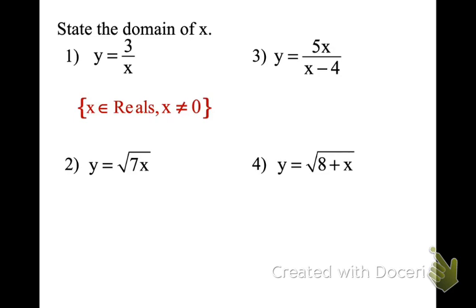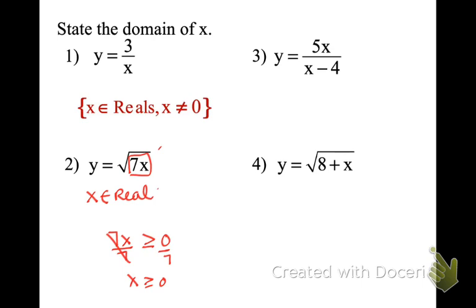Number 2 is a radical, so I can't have a negative there. My negative numbers end at 0 — it can equal 0 under the radical, since 0 is a perfect square. So I take what's under there and set it greater than or equal to 0. It can equal 0. To get x alone, I end up with x is greater than or equal to 0. So x is an element of the reals, and x has to be greater than or equal to 0.